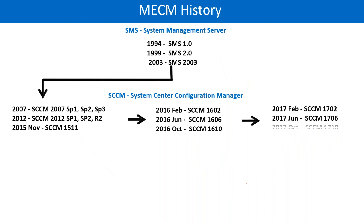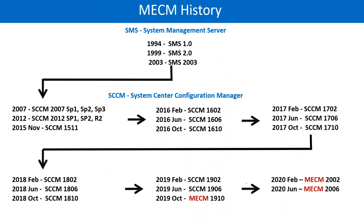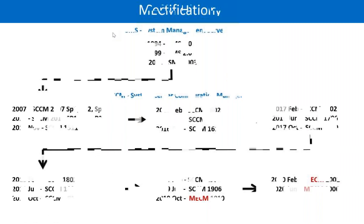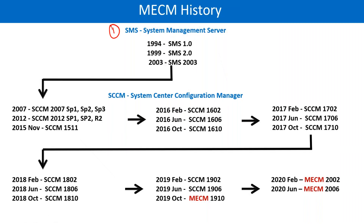SCCM started as SMS — System Management Server. That was the first name of SCCM. It started in 1994; Microsoft released SMS 1.0. SMS 2.0 was released in 1999, then SMS 2003. Then Microsoft changed the name. Instead of SMS, it became System Center Configuration Manager — SCCM. That is the second name.